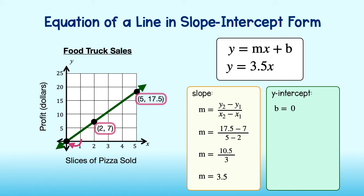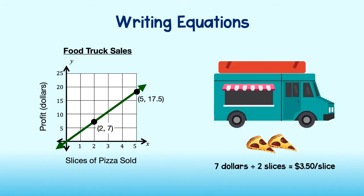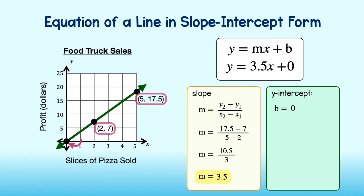Good job! By the way, did you notice something familiar? If we take a look back at the cost per slice, the cost was three dollars and fifty cents per slice. This is the same as the slope of the line.